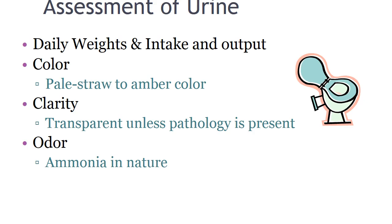Daily weights are the single most important indicator of fluid status. Measuring intake and output at 24-hour intervals gives an overall status of fluid balance. It is important to recognize trends in weight and I&Os. An hourly output of less than 30 milliliters for more than two hours is cause for concern and further assessment. The color of urine should be pale straw to amber; it will be more concentrated in the morning. Medications and certain foods can change color — for example, beets, rhubarb, and blackberries. Dark amber urine may result from bilirubin from liver disease. Urine should be transparent; stagnant urine has a strong ammonia odor. A sweet or fruity odor is seen in patients with diabetes or those on starvation diets.